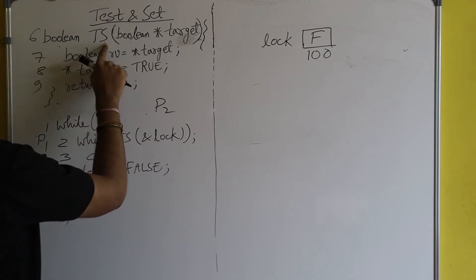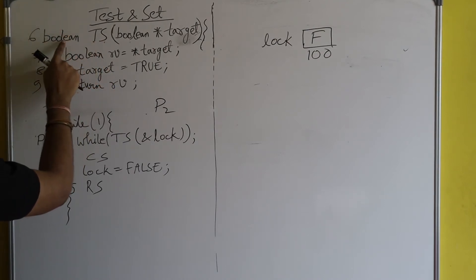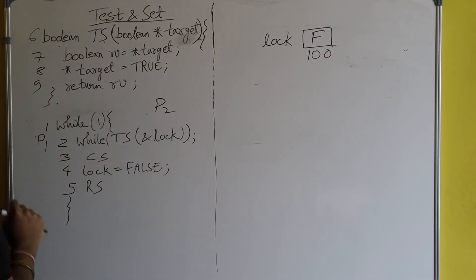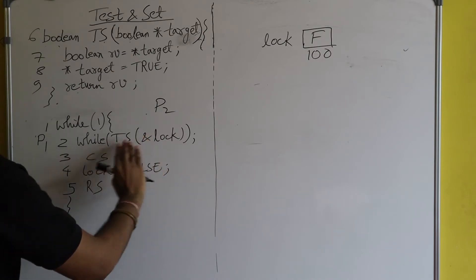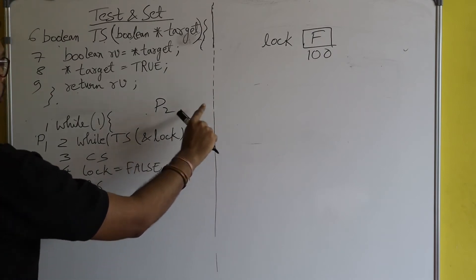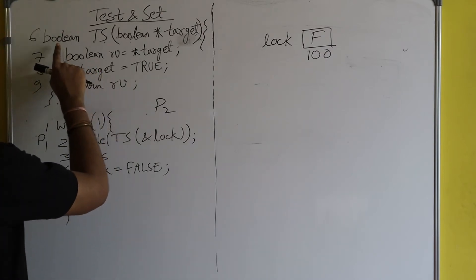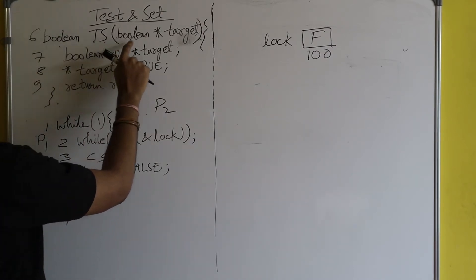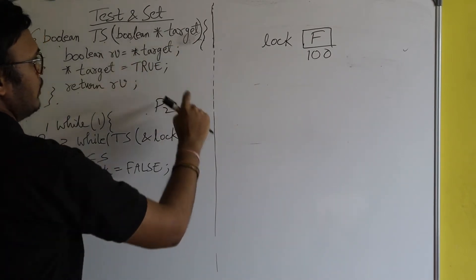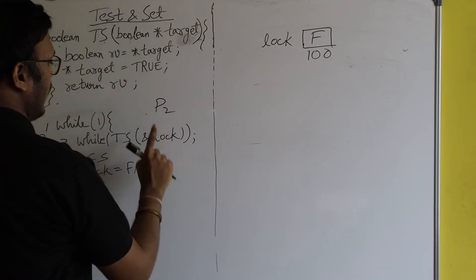Test-and-set will return a boolean value — either true or false. If false is returned, the while loop is broken; if true is returned, the while loop is not broken and the process gets trapped there. In the definition: boolean TS(boolean *target) — target is a pointer to the boolean variable.